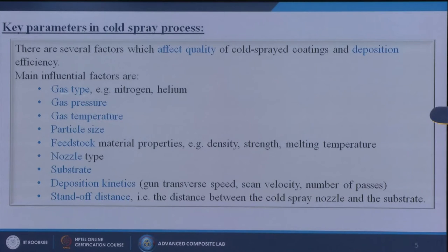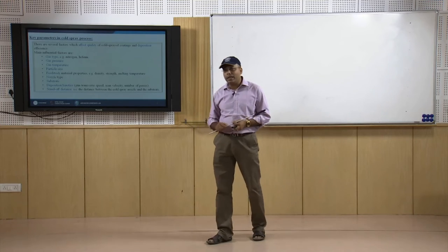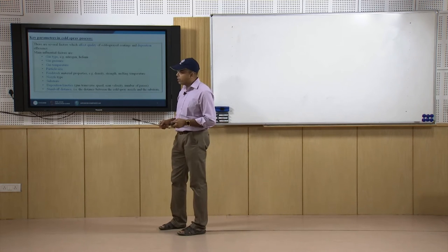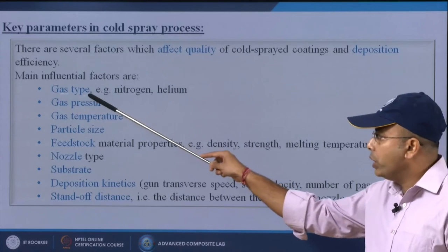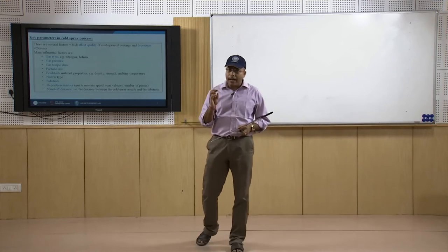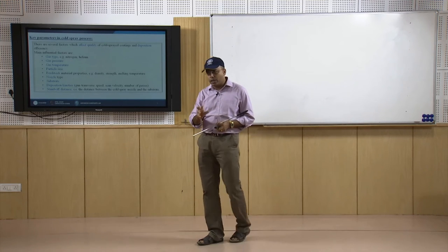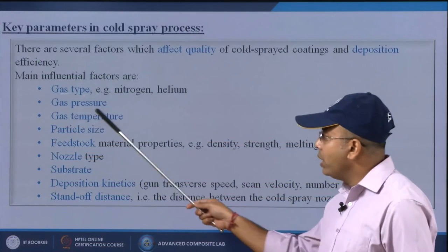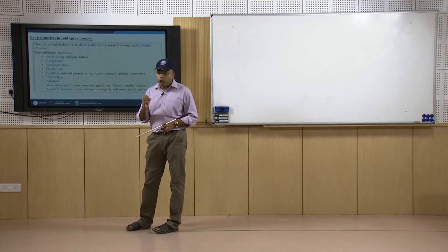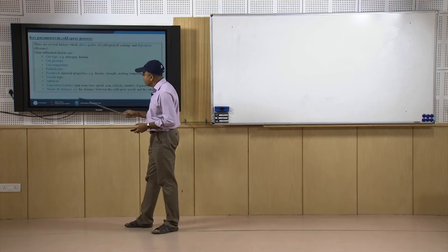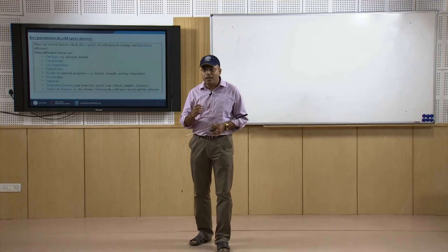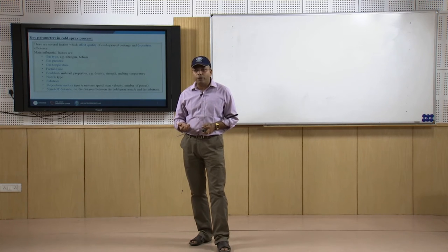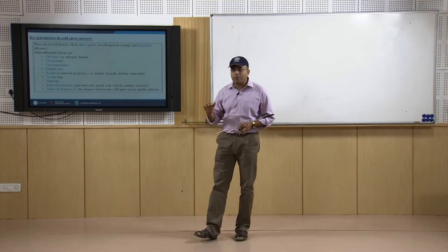The key parameters that affect the quality of cold spray coatings and deposition efficiency are: first, the gas type — for example helium or nitrogen — and the reactive gas should not react with the substrate. Then, the gas pressure determines how much velocity the nanoparticles can achieve to stick to the substrate. Gas temperature ensures the particles slightly melt and bond. Particle size also matters — too coarse a grain size results in non-uniform or wavy surface coatings.